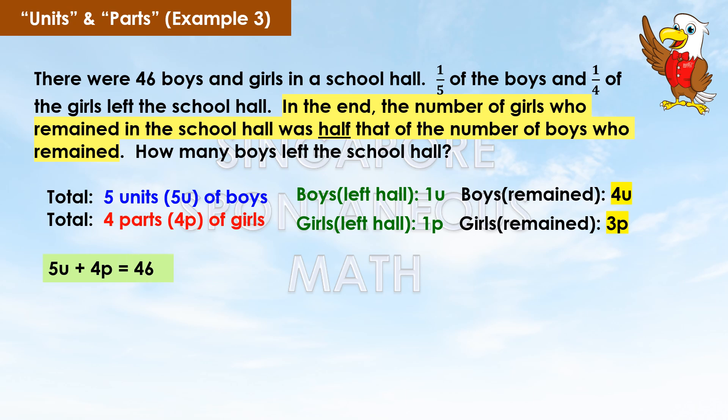5u plus 4p equals 46. Four units of boys and 3 parts of girls remained. The number of girls who remained was half that of the number of boys who remained. Therefore, 4 units equals 3 parts times 2, which is 6 parts.